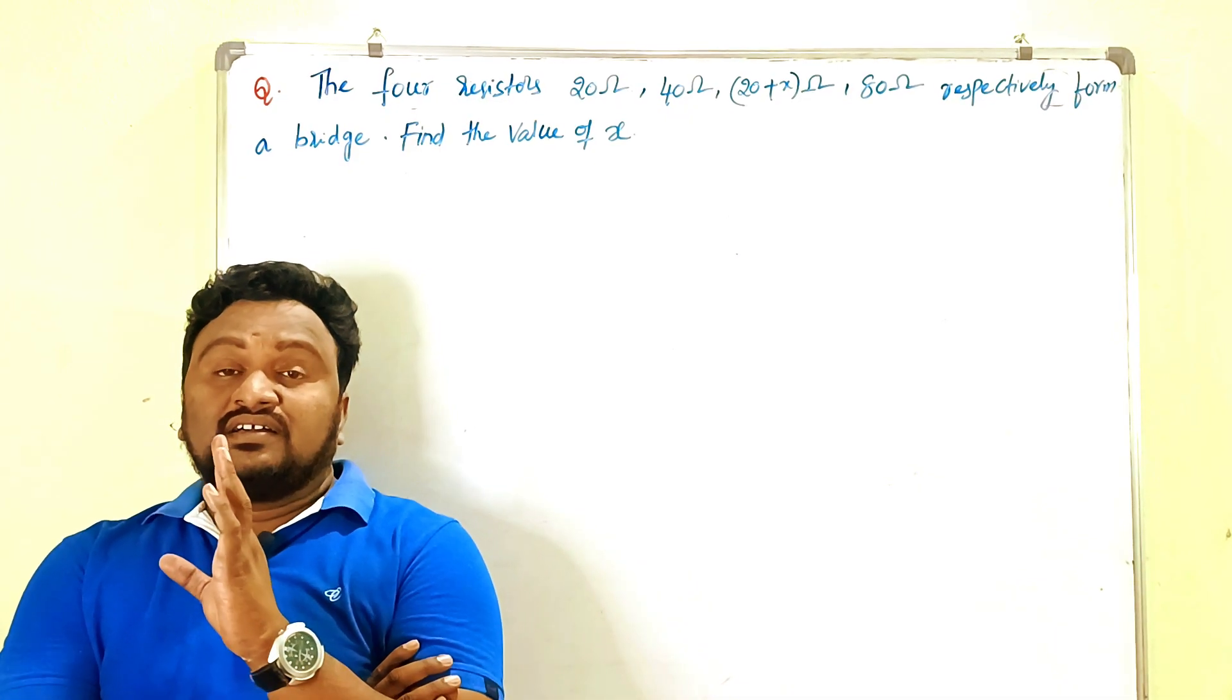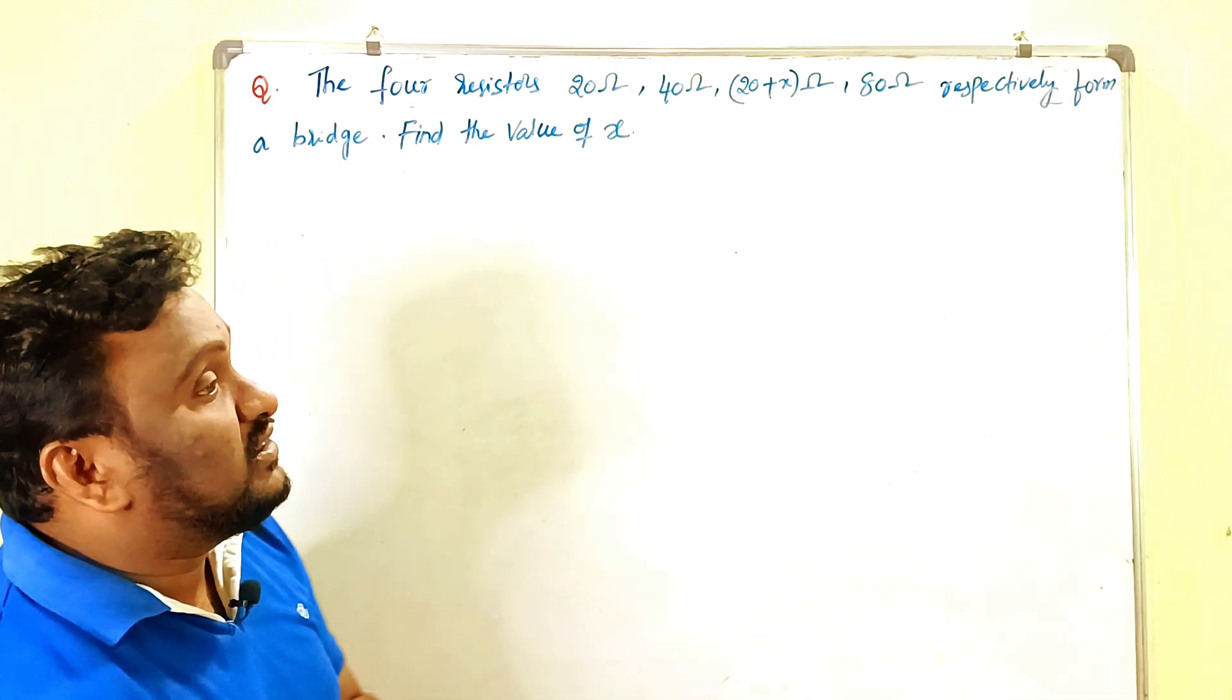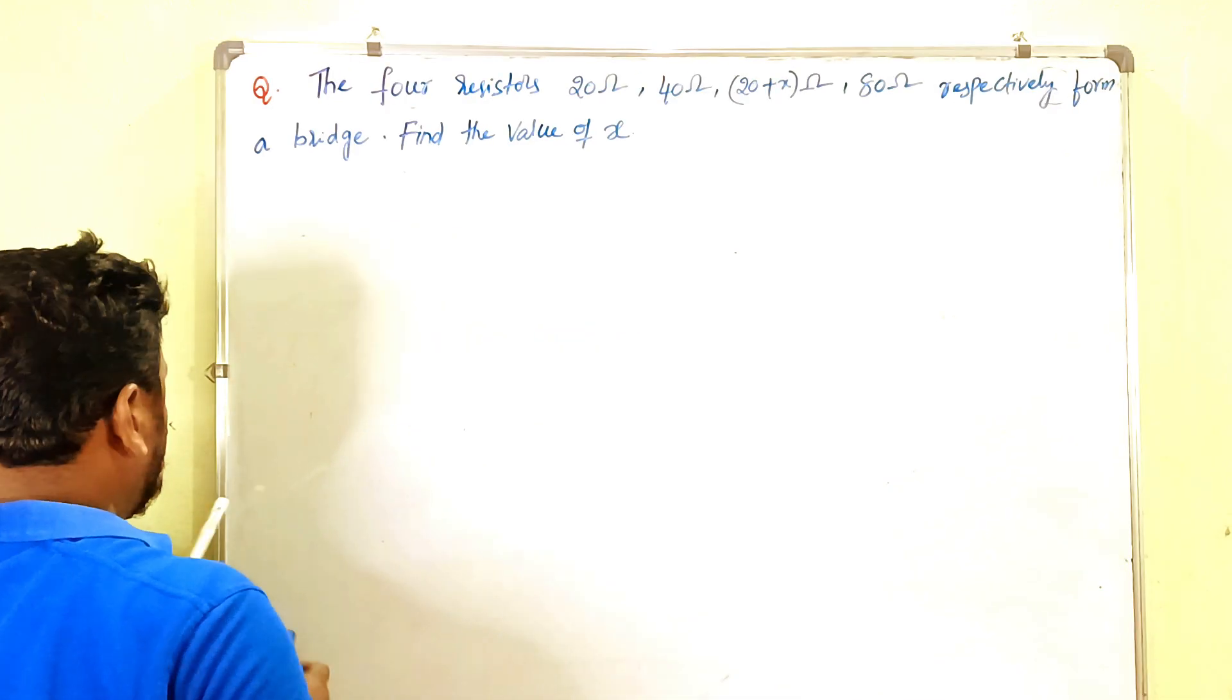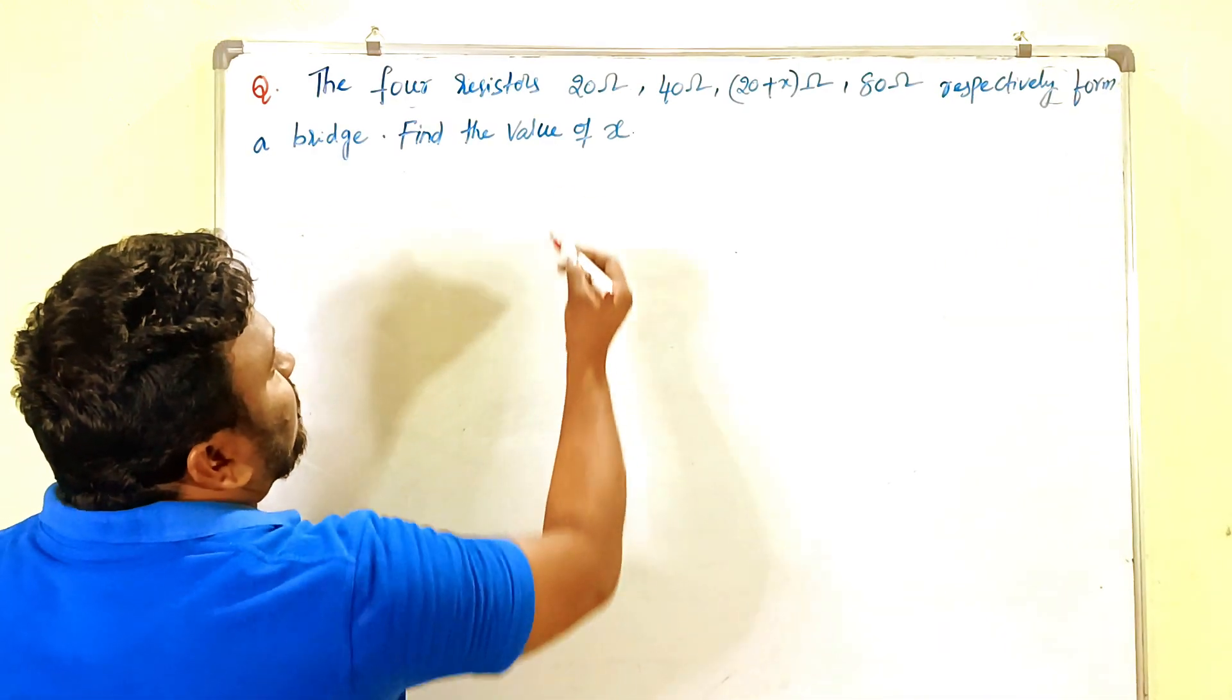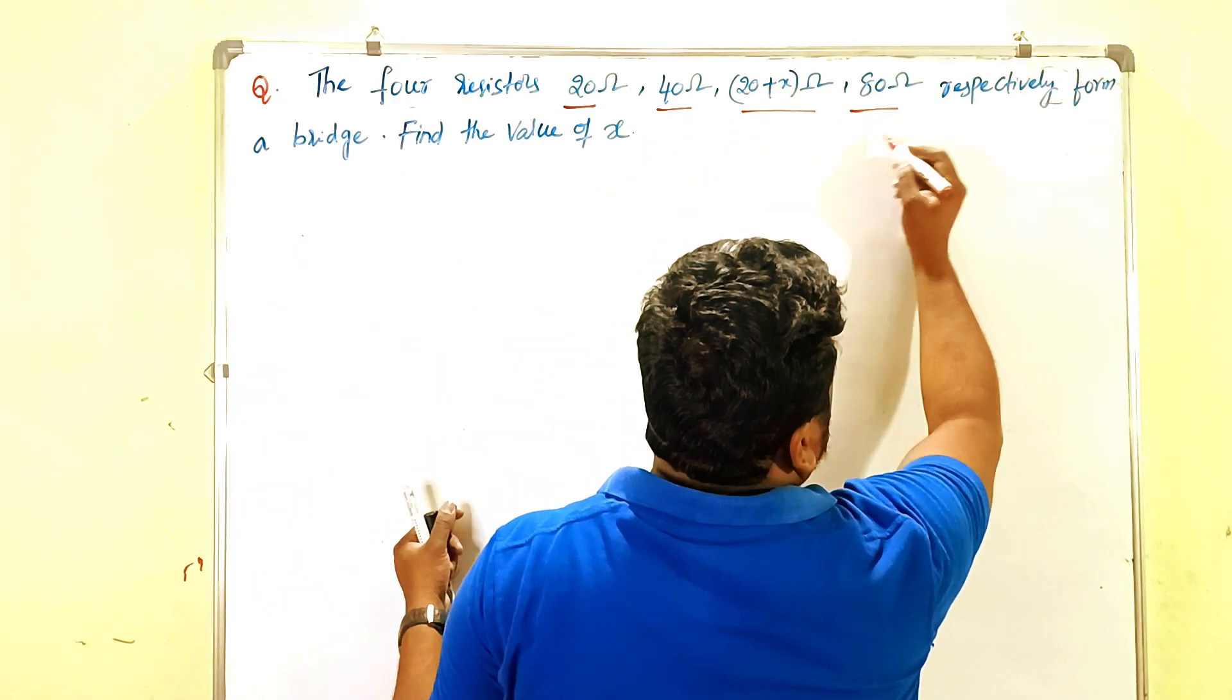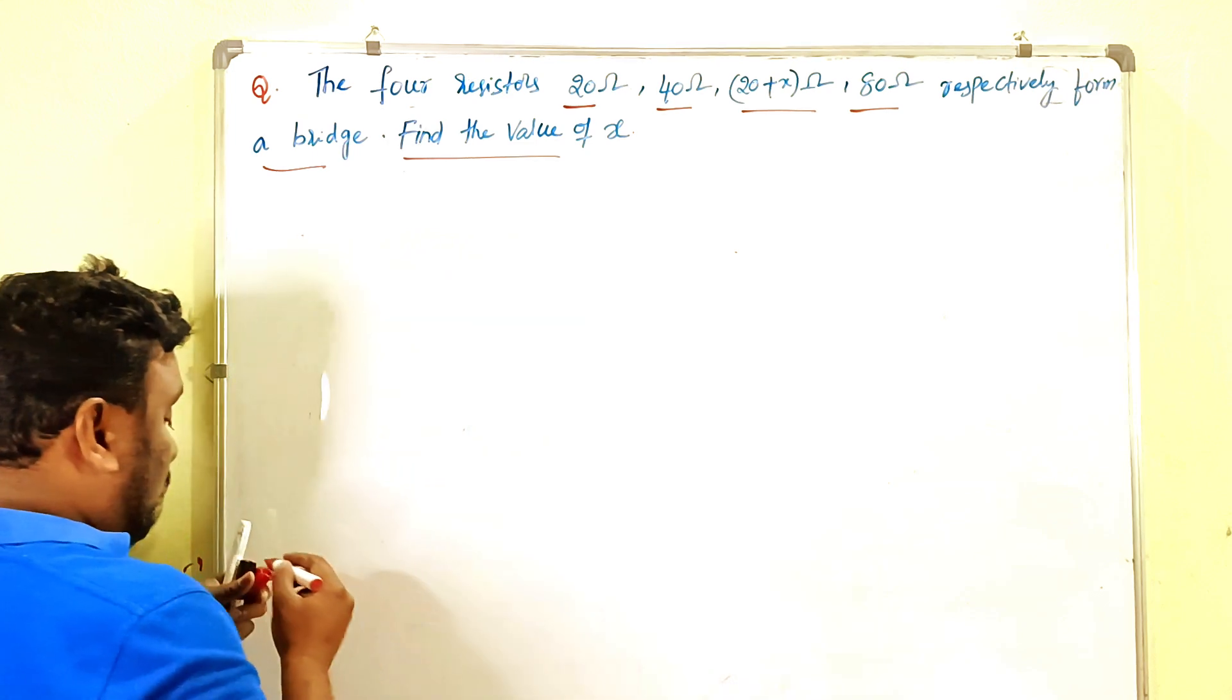This is one problem related to the long answer question combination. It's especially on Wheatstone bridge. The question should be like this: The four resistors 20 ohms, 40 ohms, 20 plus X ohms, and 80 ohms respectively form a bridge. Find the value of X.